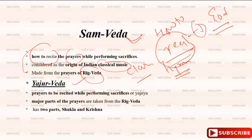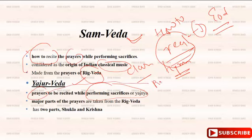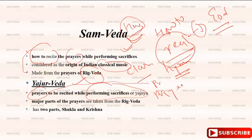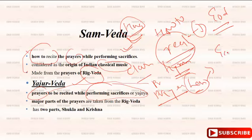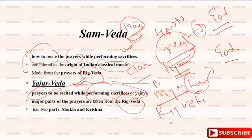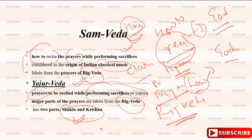The third Veda is the Yajur Veda. It contains prayers to recite while performing sacrifices — the names of the prayers to be recited during rituals performed towards god. A major part of the Yajur Veda is taken from the Rig Veda itself. It has two parts: Shukla Yajur Veda and Krishna Yajur Veda.